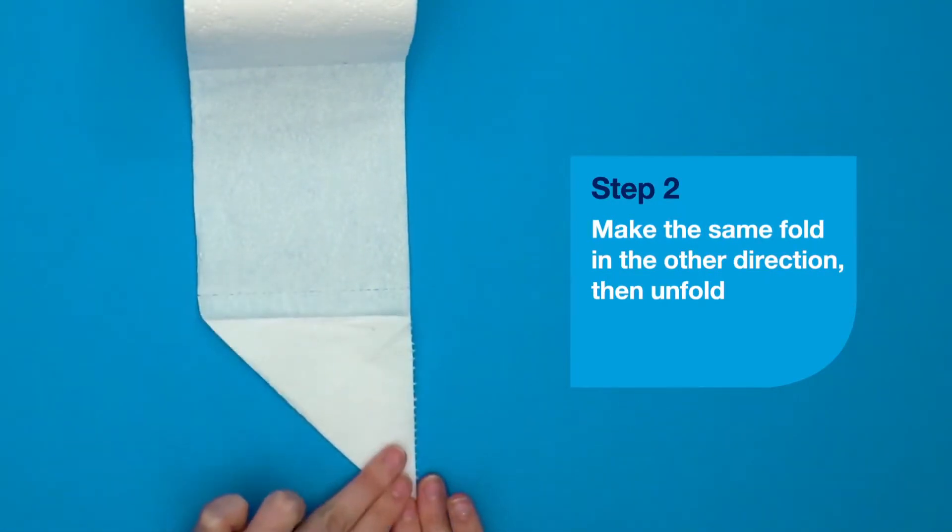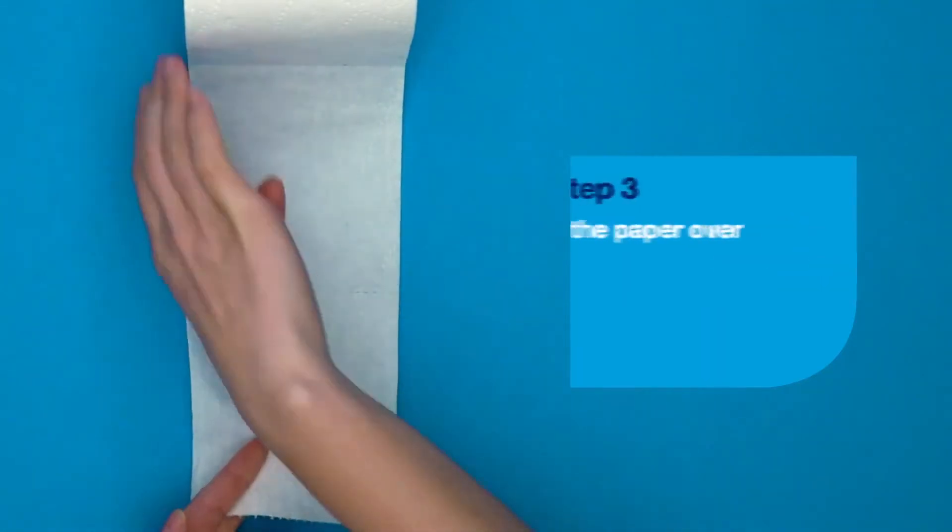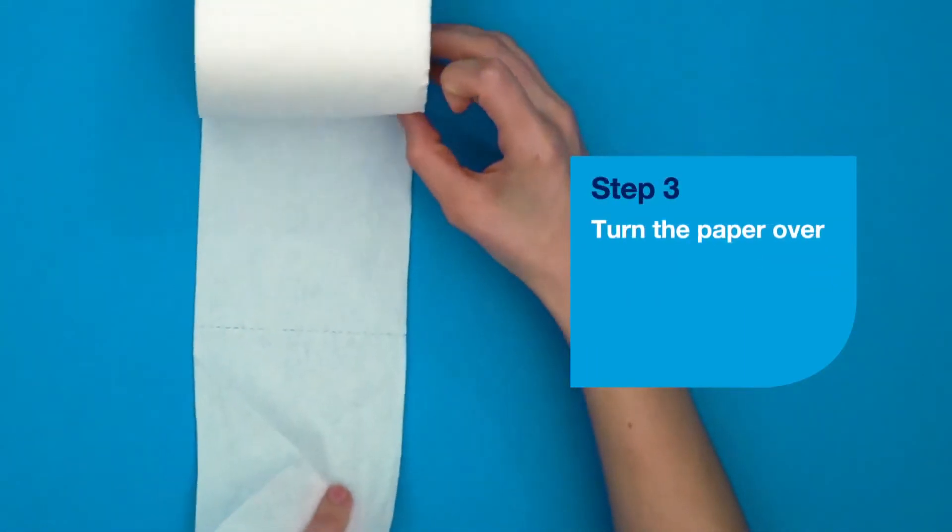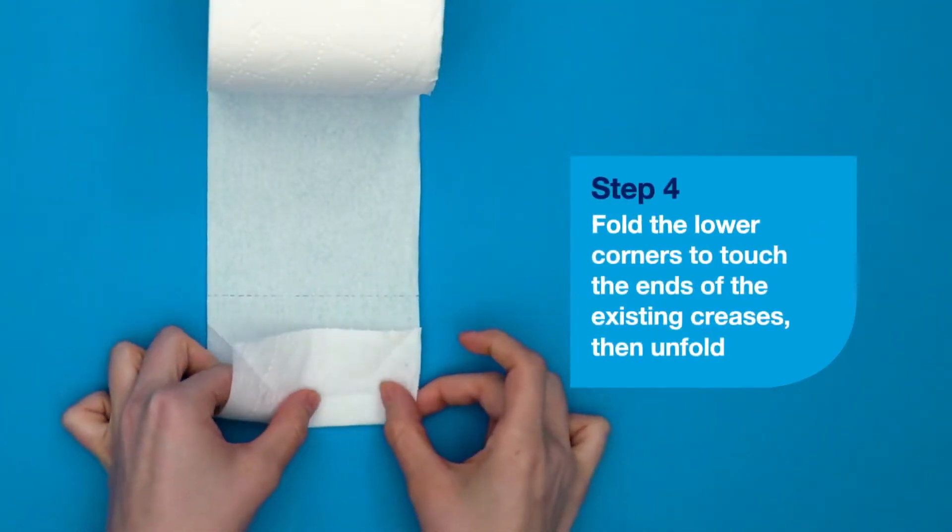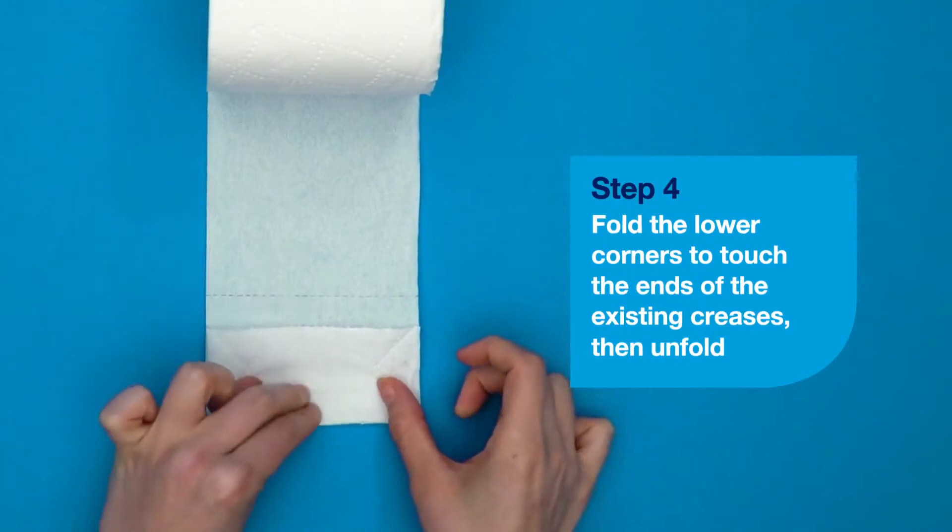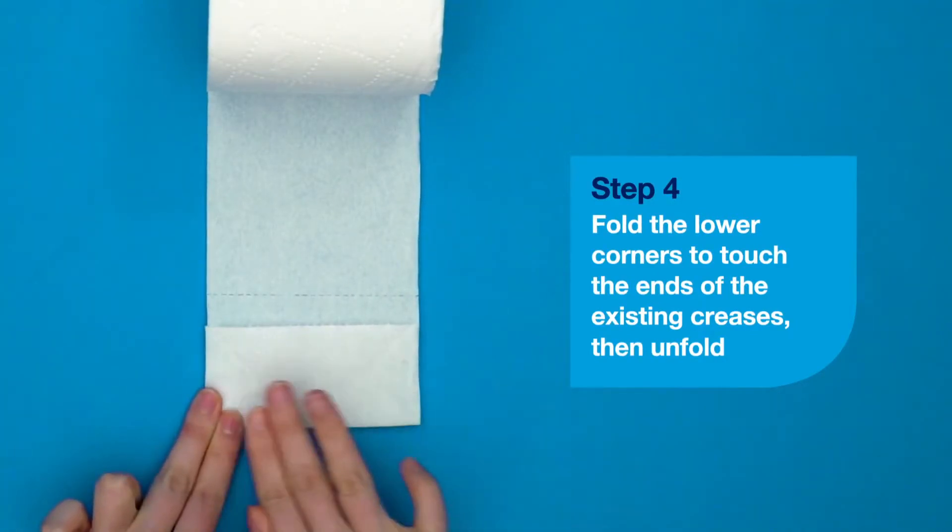Next, fold the lower corners to touch the ends of the existing creases, then unfold. Carefully turn the paper over again.